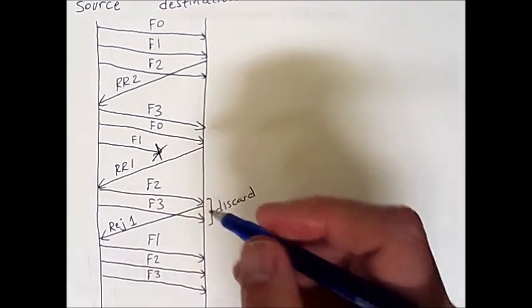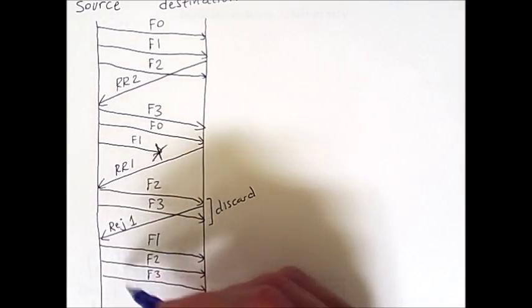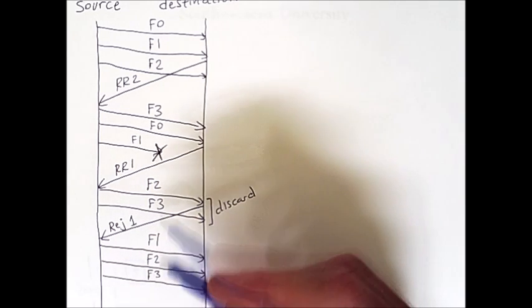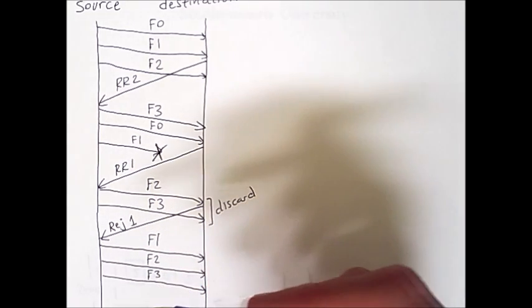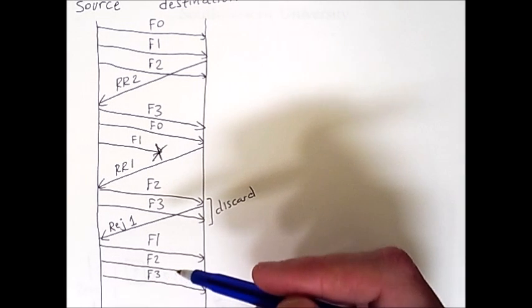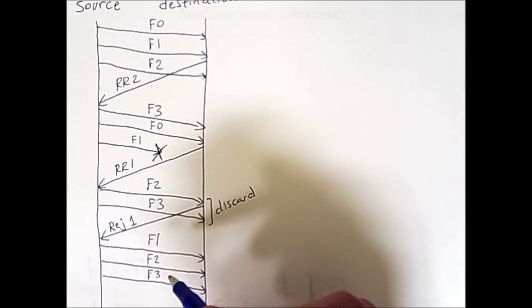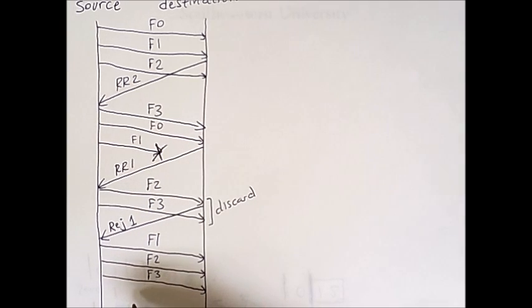Now once again, the most frames that the source can send without receiving acknowledgement is 3 because we only have 4 possible sequence numbers and we have to make sure that the sliding window still has viable frames in it. At this point, the sliding window on the source side does not have any viable frames in it. So after sending frame 3, the system will wait.